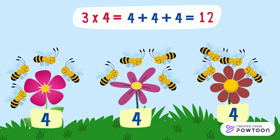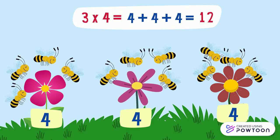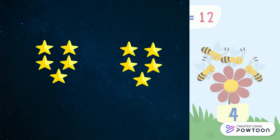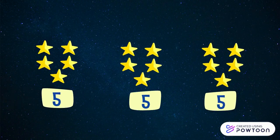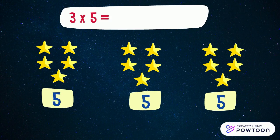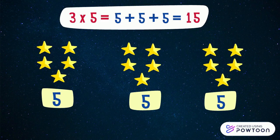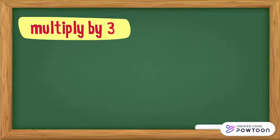There are three groups of five stars each, so the total number of stars is three times five equals five plus five plus five equals fifteen. So three times five equals fifteen.